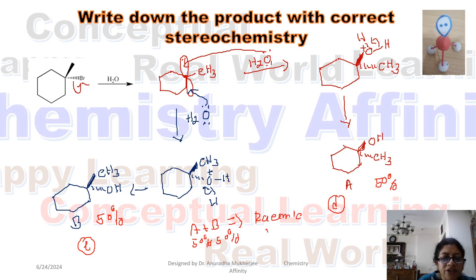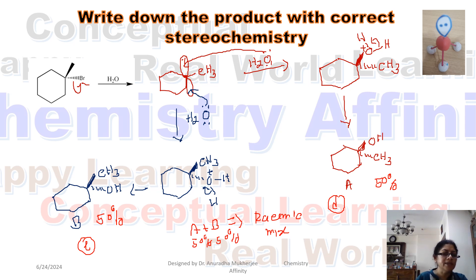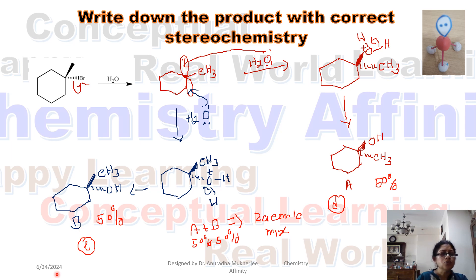In the racemic mixture, 50 percent A has clockwise (dextrorotatory) optical rotation, and 50 percent B has anticlockwise optical rotation — so they cancel each other out. The final racemic mixture doesn't show any optical activity. For an SN1 reaction, we get two products that are enantiomers of each other, so they have opposite optical rotations.